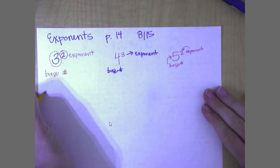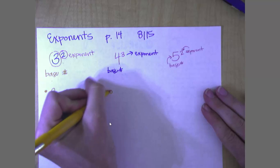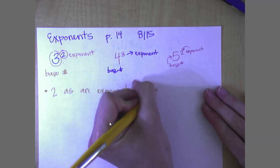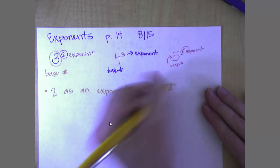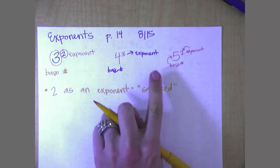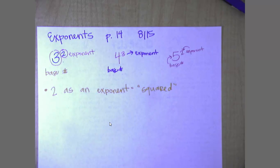If we have a 2 as an exponent, we're going to say that is squared. So this would be pronounced 3 squared. And this would be pronounced 5 squared. So if it's got that little bitty baby 2 on it, the grown-up way to say it is not 3 to the second power or 5 to the second power. We're going to say 5 squared or 10 squared.